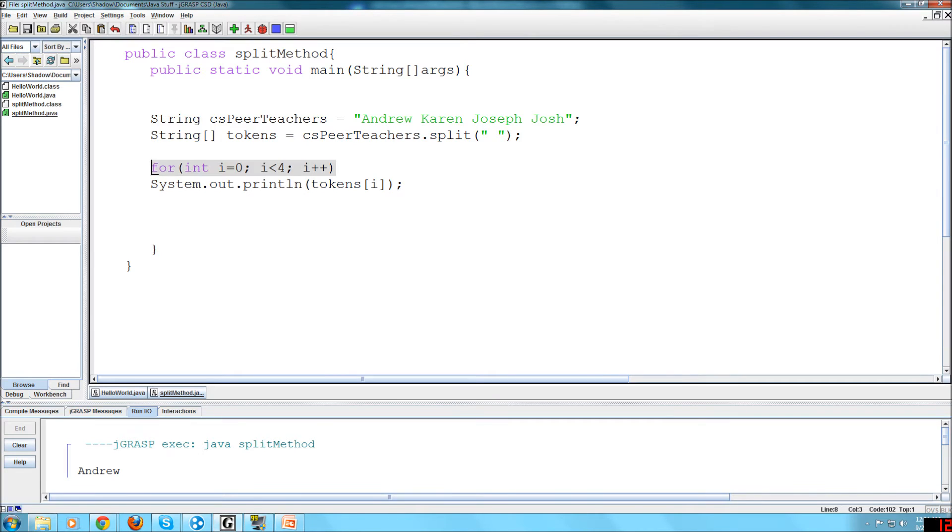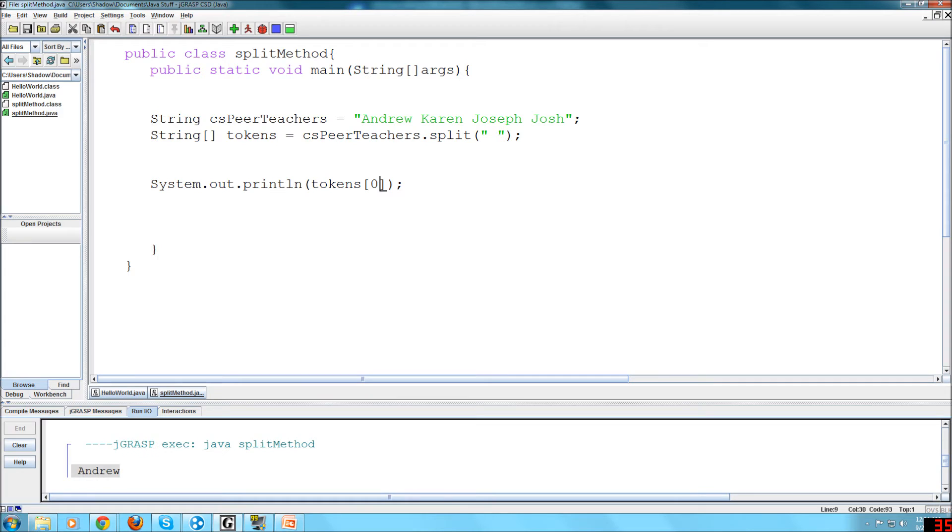And just to prove that to you, I'm going to just print out my name. So since my name came first, it's going to be in the zero spot on the array. So let's compile, print, and see, there's my name.